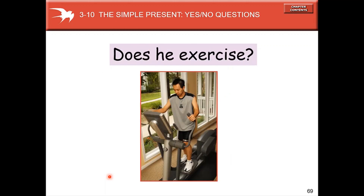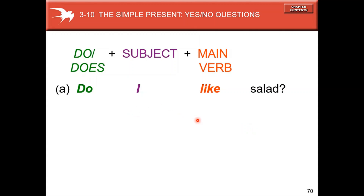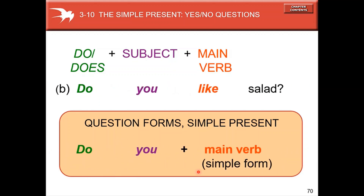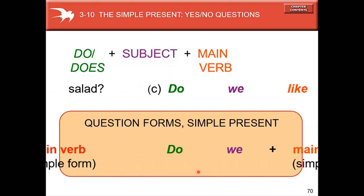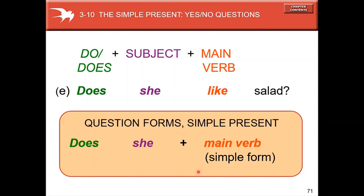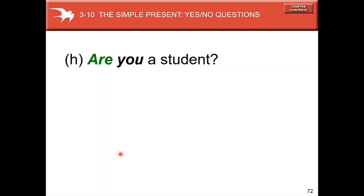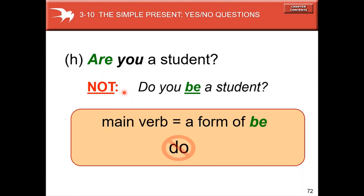Now, yes/no questions: 'Does he exercise?' For yes/no questions, simply put the helping verb 'do' or 'does' at the beginning, followed by the subject and the main verb. For she, he, and it, use 'does.' Note: if the subject uses 'be,' you say 'Are you a student?' — not 'Do you be a student?' — because the main verb is a form of 'be.'